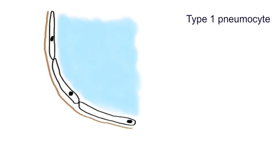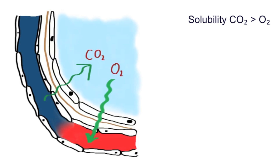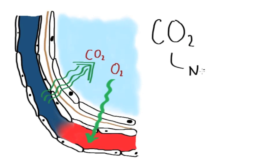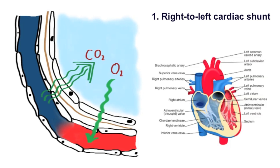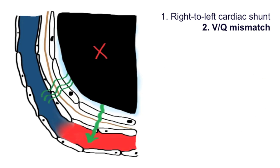Let's take a look at type 1 respiratory failure and the gas exchange interface. During gas exchange in the alveoli, oxygen passes through the type 1 pneumocyte, some basement membrane, and the endothelial cell of the capillary, while carbon dioxide passes the other way. CO2 is about 20 times more soluble than oxygen, making it much more readily exchanged across this interface. So if there is any problem with the gas exchange interface, the PaCO2 may be normal while the PaO2 decreases. Causes of type 1 respiratory failure are either conditions that cause a right-to-left cardiac shunt — deoxygenated blood effectively bypassing the gas exchange interface altogether — or conditions that cause a ventilation-perfusion mismatch, also known as VQ mismatch.